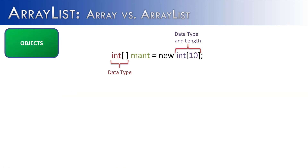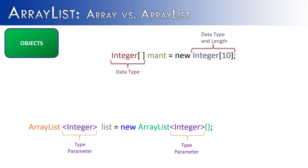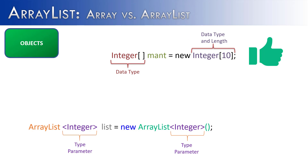Since we just got done talking about primitives, let's talk about objects. We know that an array list can hold objects — in fact, it can only hold objects. What about arrays? If I tried to put integers inside of an array, yes, it would work just fine. So primitives can be stored in arrays but not in array lists, but objects can be stored in both arrays and array lists.